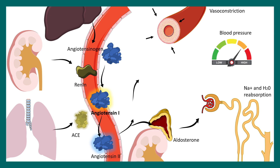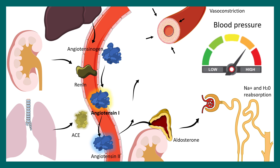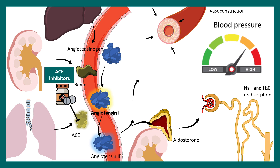There are several problems with this system. If this system is hyperactive, there would be an increase in blood pressure. That is why there are many medications which target molecules in this pathway. The class of inhibitors known as ACE inhibitors inhibit the angiotensin-converting enzyme, which prevents the production of angiotensin-2. Automatically, the vasoconstrictive activity and the sodium and water retention activity would be decreased.